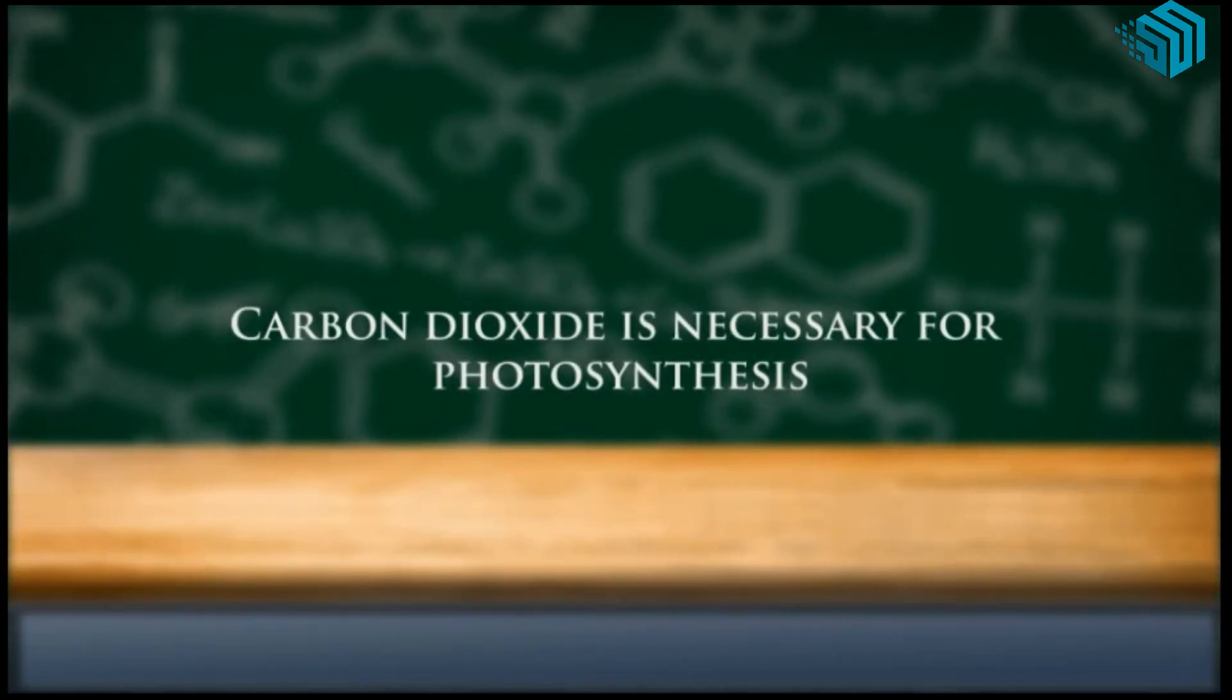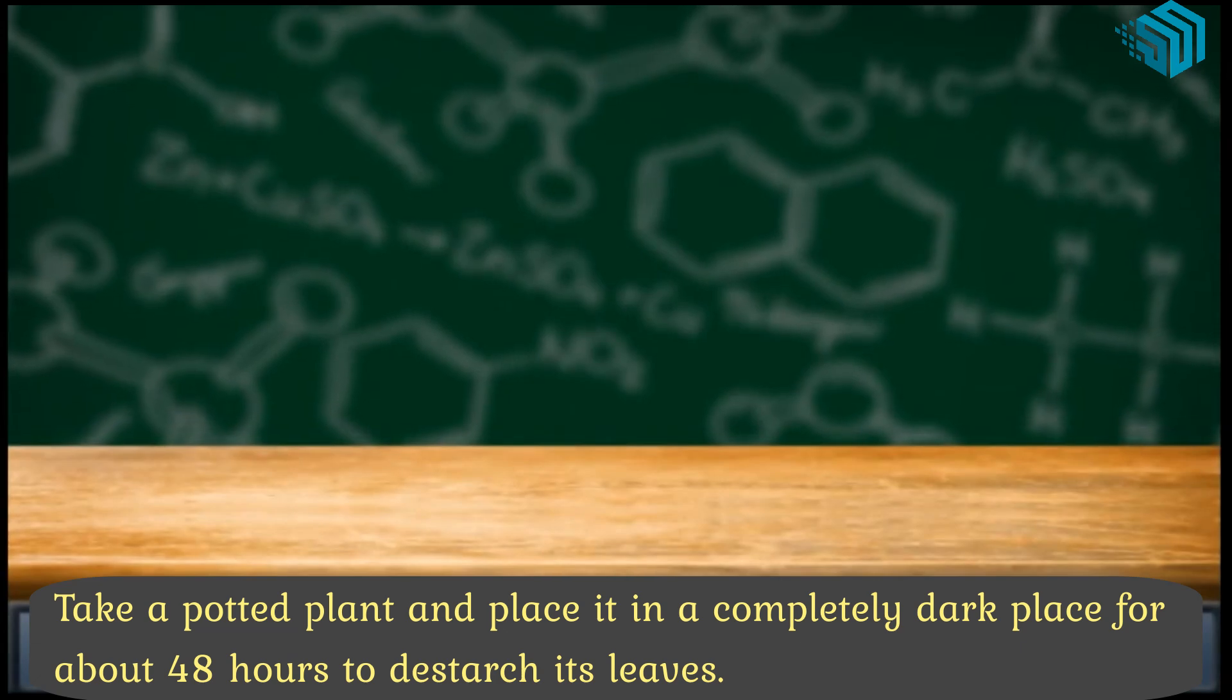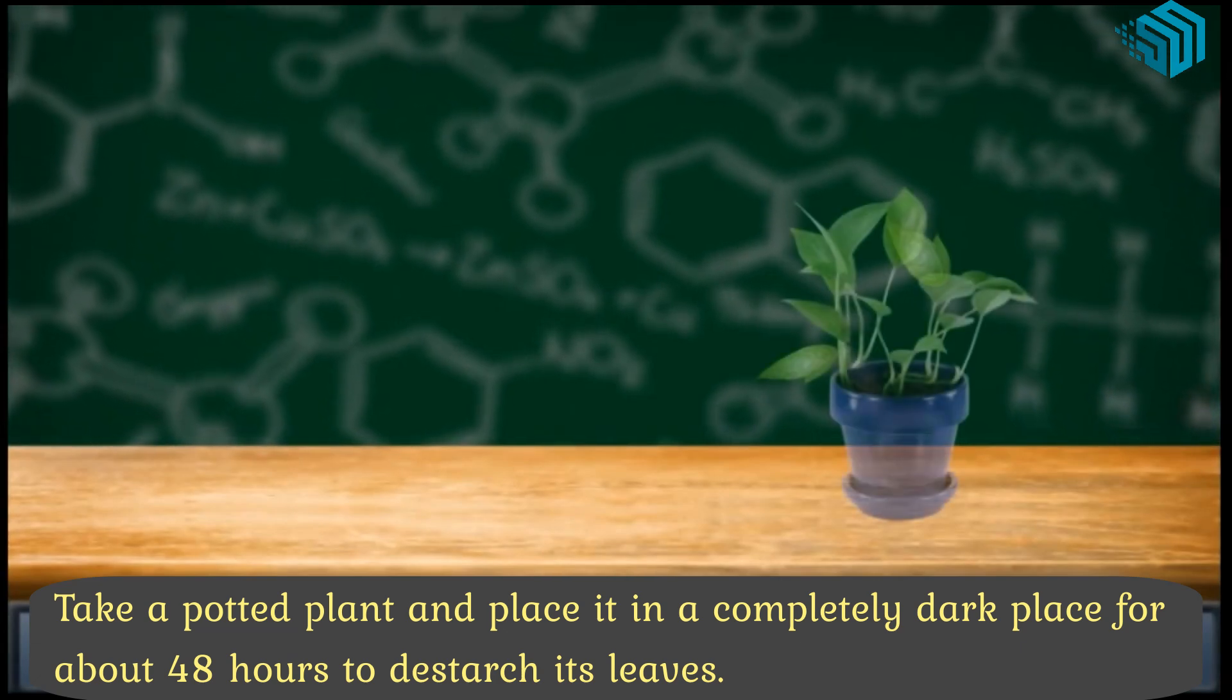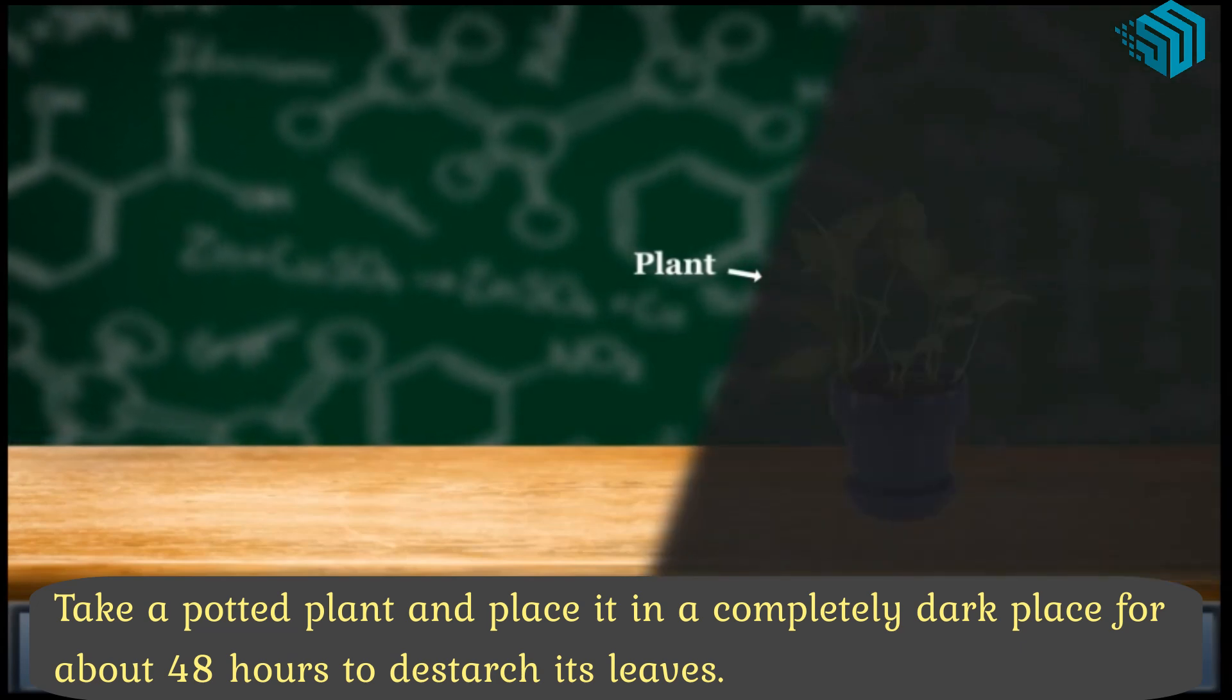Carbon dioxide is necessary for photosynthesis. Take a potted plant and place it in a completely dark place for about 48 hours to destarch its leaves.